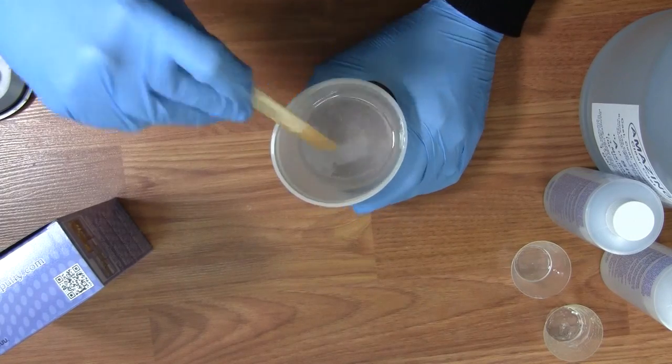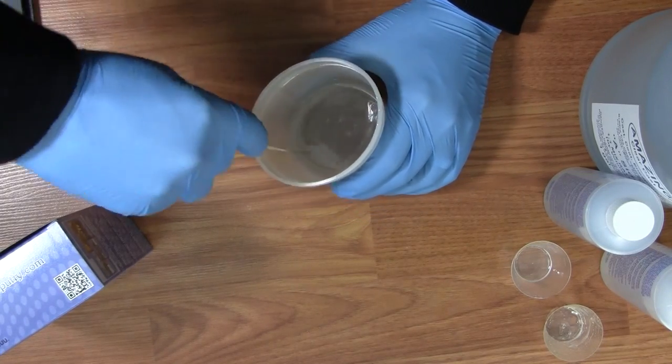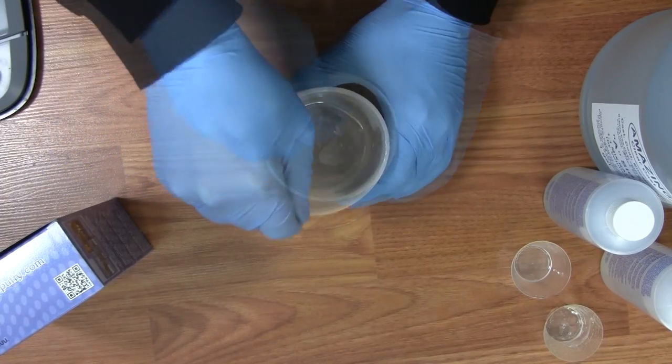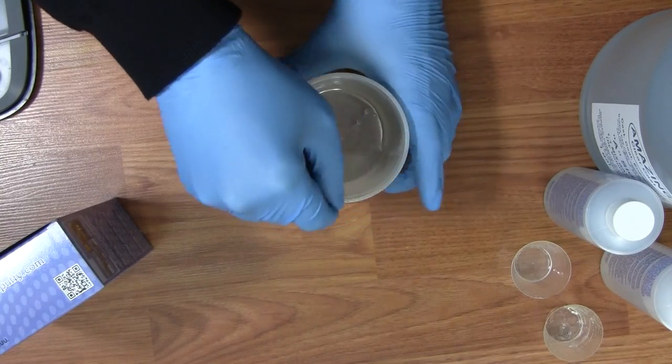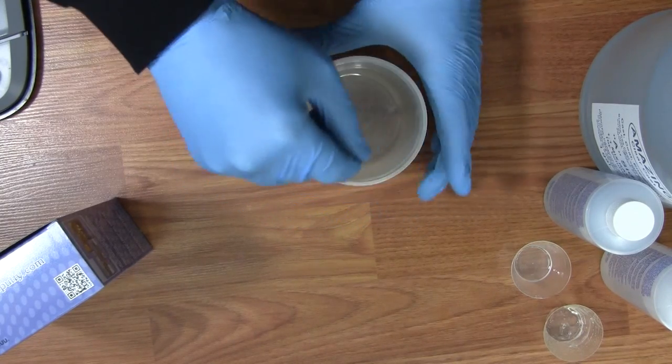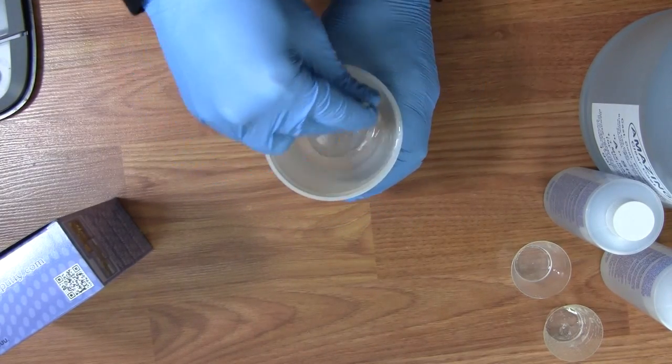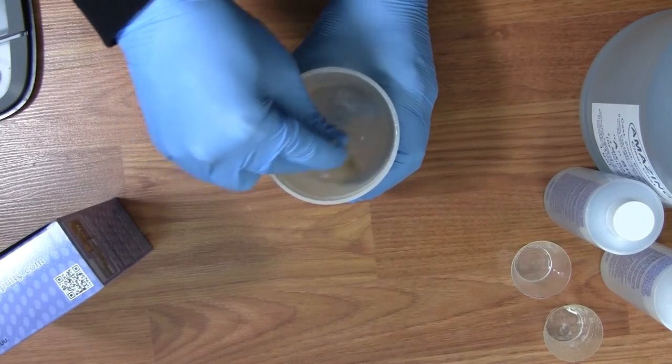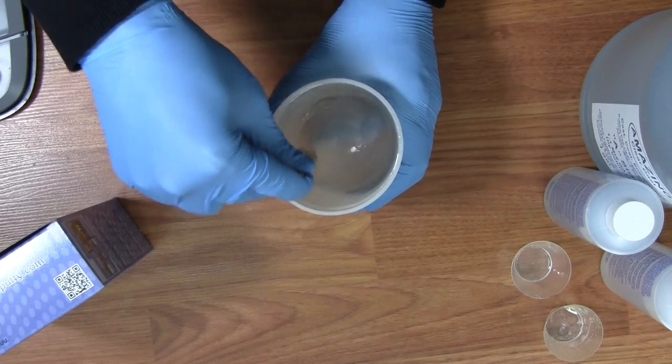Follow this process a couple times while you thoroughly mix the resin. The entire mixing process should take a minimum of two to three minutes. Failing to mix the Amazing ClearCast properly will result in a tacky surface.